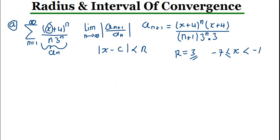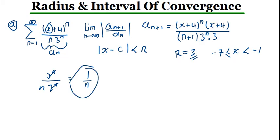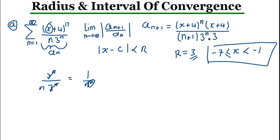Testing X equals negative 1: substituting gives negative 1 plus 4, which is positive 3 to the power N, divided by N times 3 to the power N. The 3 to the power N cancels, leaving 1 over N. This is a p-series with P equals 1, which diverges. So negative 1 is not included in the interval, giving the final interval as negative 7 ≤ X < negative 1.